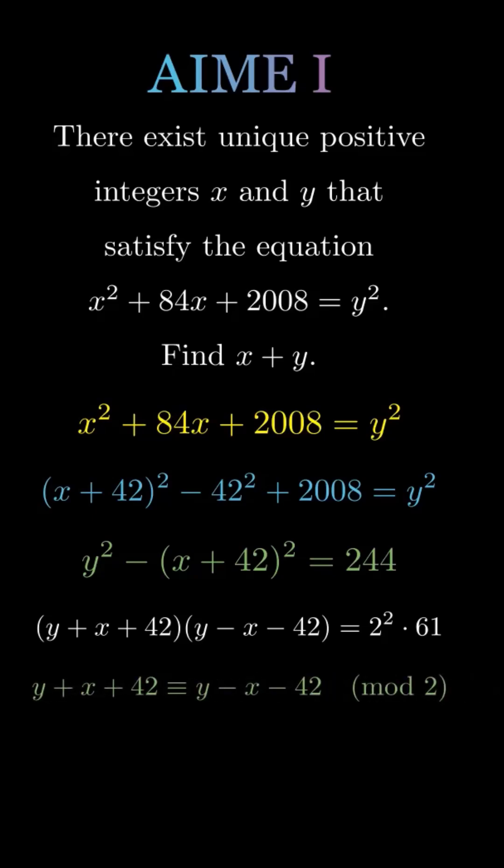Then signs have no effect on the remainder when dividing by 2. Both y plus x plus 42 and y minus x minus 42 must be either even or odd. But their product is even, so both must be even.